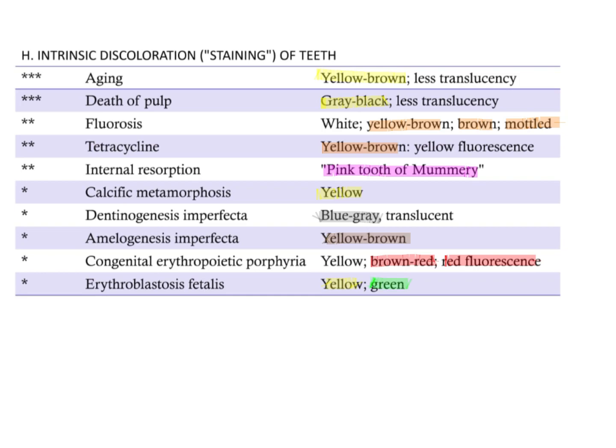So the question is on congenital porphyria. Make a note of this table — the colours here will help you understand easily.